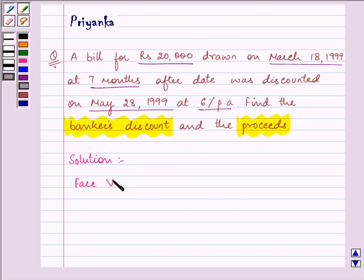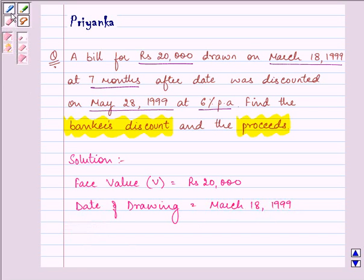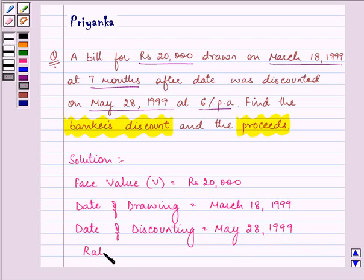The face value of the bill is given to us as Rs. 20,000. The date of drawing the bill is given to us as March 18, 1999. The date of discounting is given to us as May 28, 1999. The rate of interest is 6% per annum.